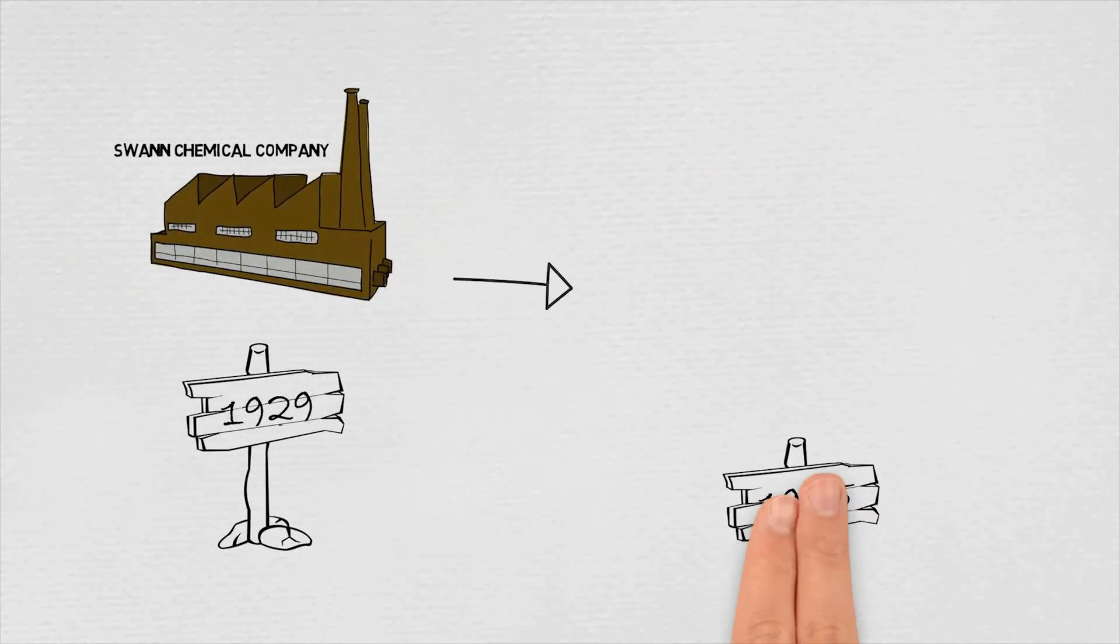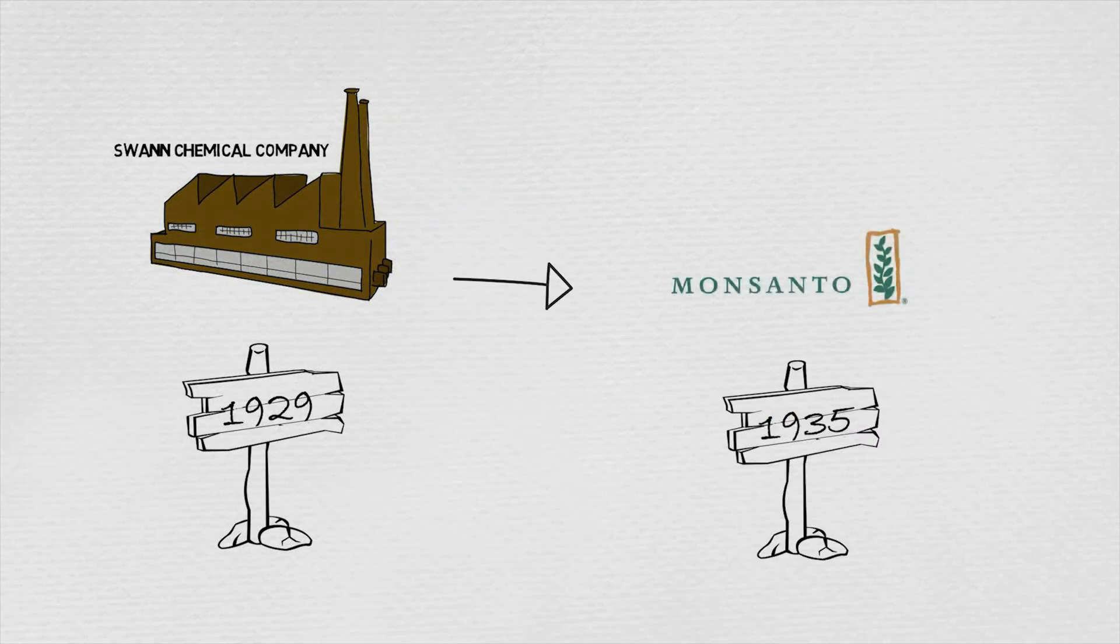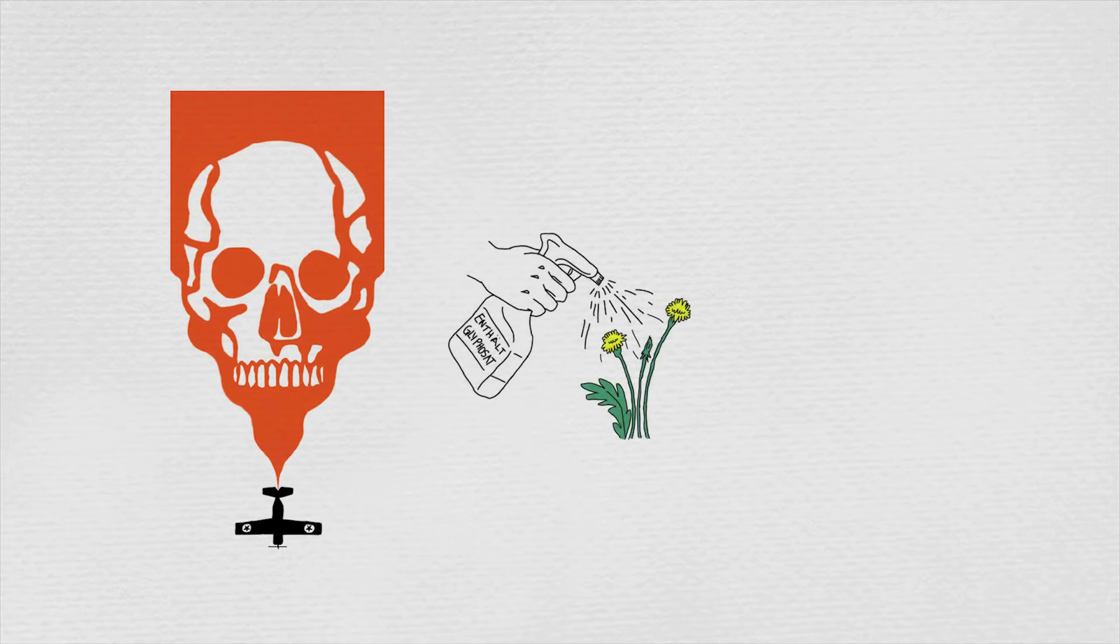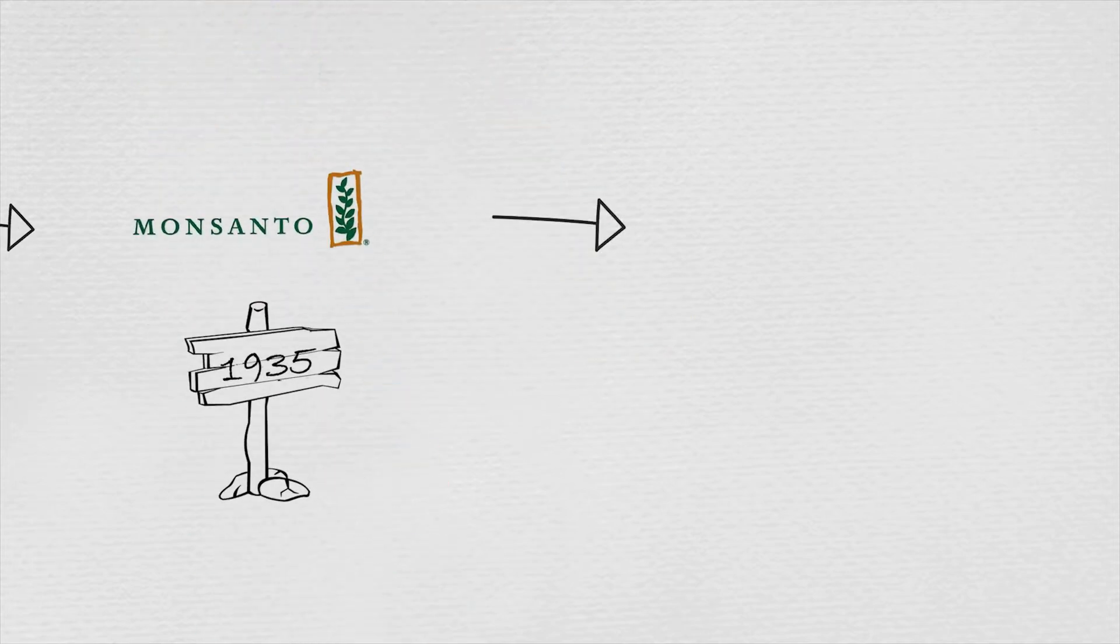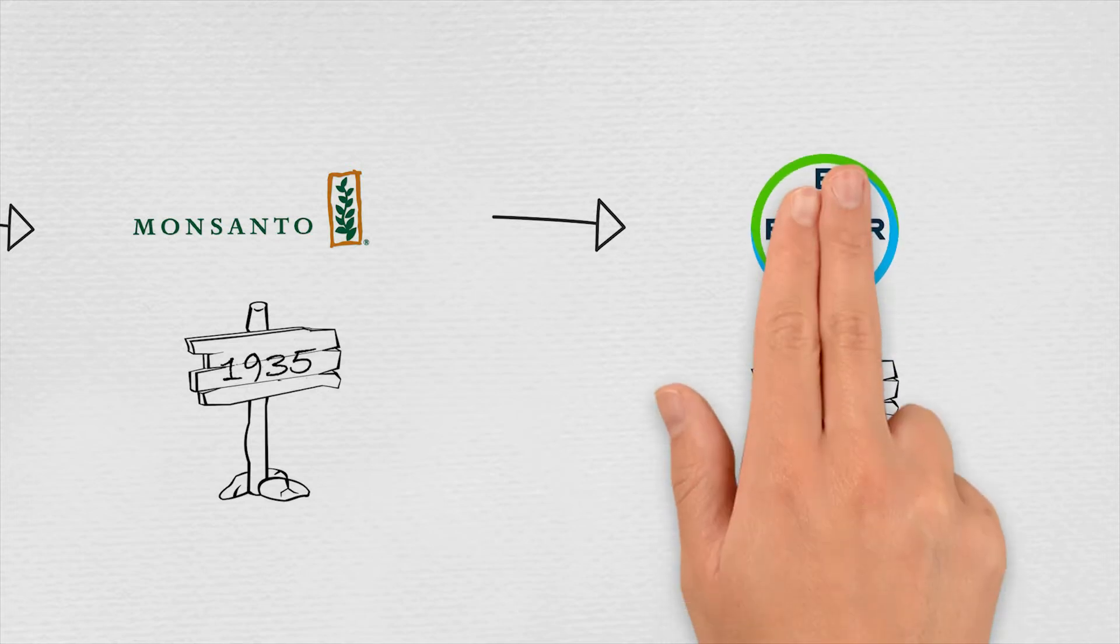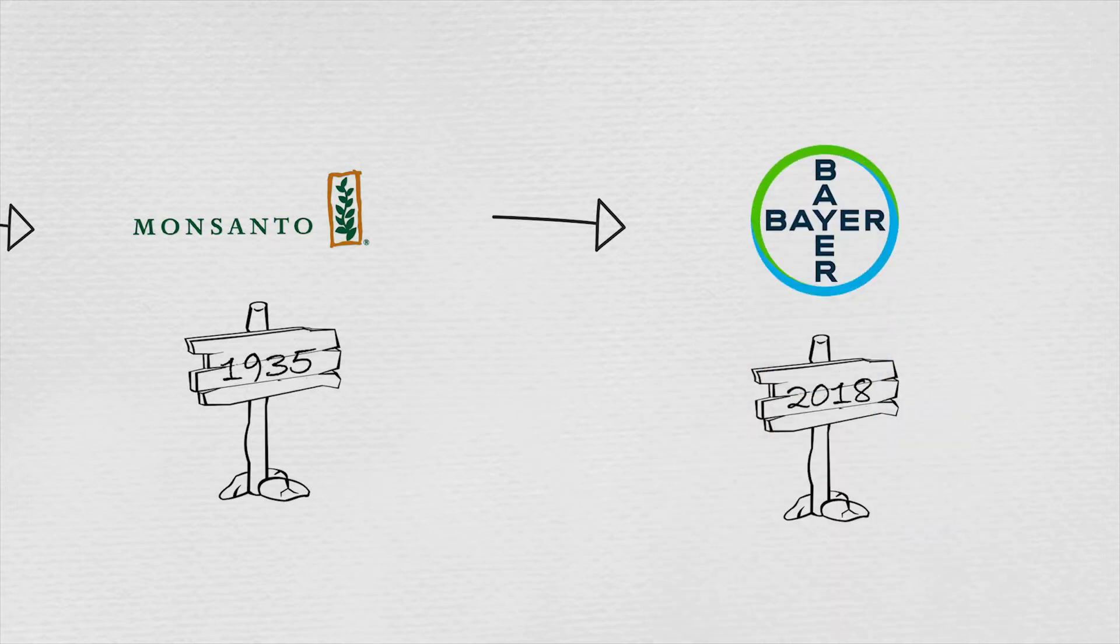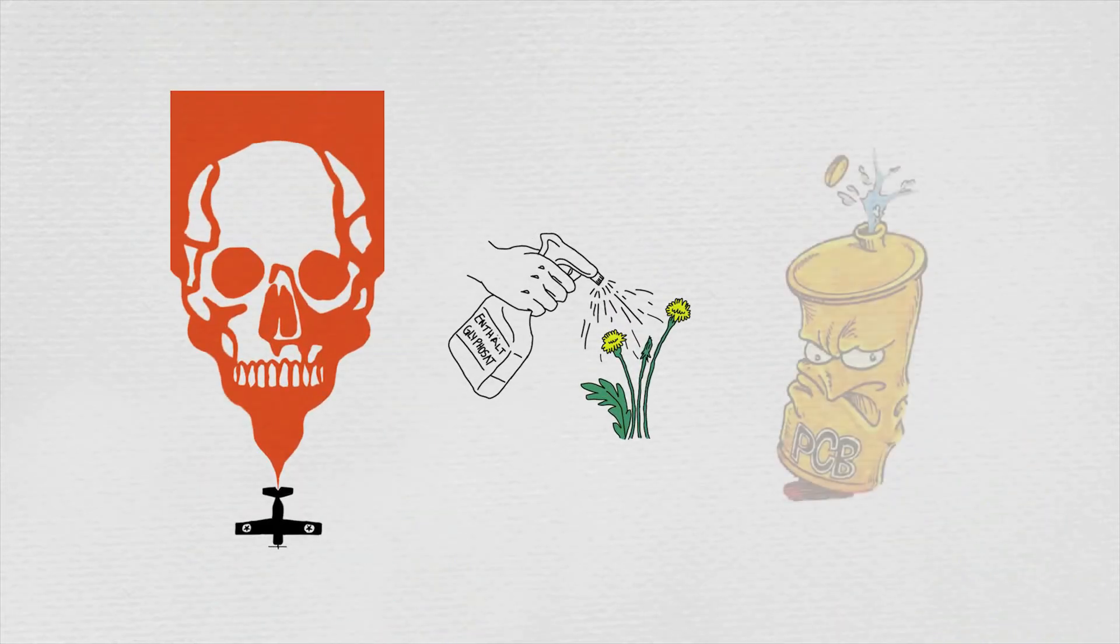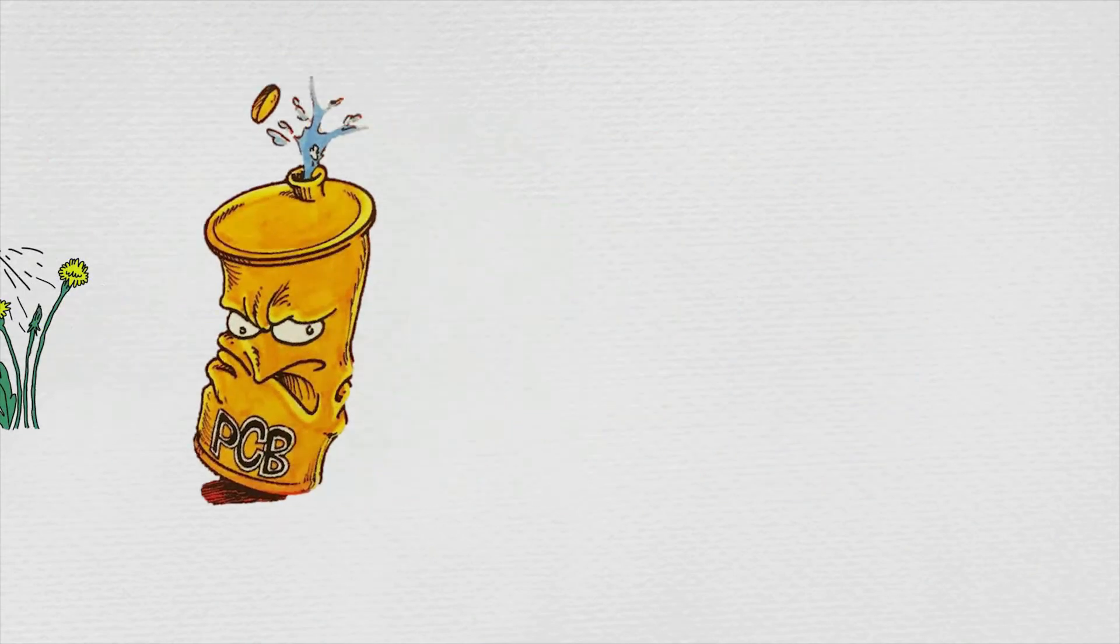By 1935, the company had been taken over by the group Monsanto, which is nowadays known for its use of the dioxin-containing defoliant called Agent Orange during the Vietnam War, as well as for the controversial herbicide glyphosate. In 2018, Monsanto was taken over by the German group Bayer, which used to be the second biggest producer of PCBs until its production was stopped in 1983.